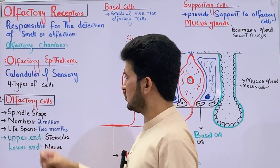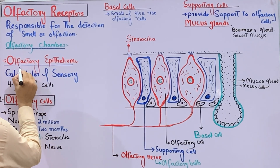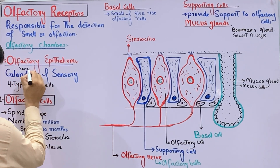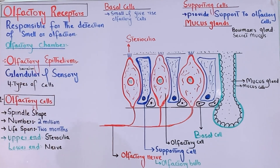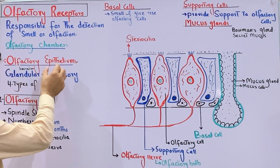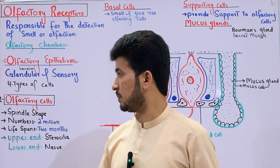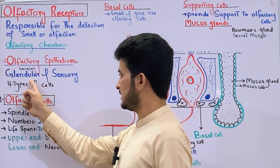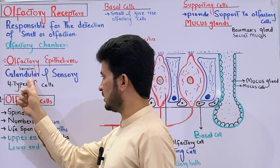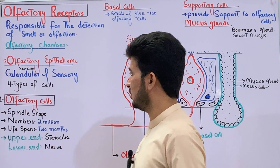This olfactory epithelium is glandular and sensory in nature. The glandular part performs secretion — specifically, it secretes mucus. The sensory part is responsible for detecting smell. So this membrane, the olfactory epithelium, has two functions: glandular, which releases mucus, and sensory, which detects smell.